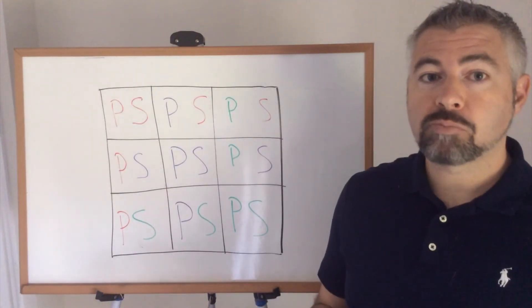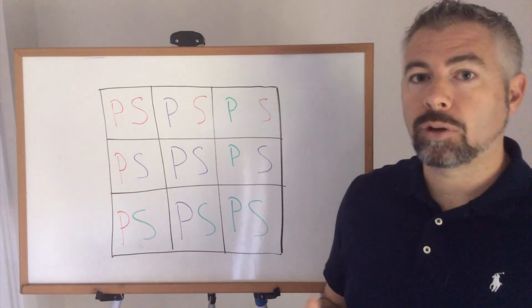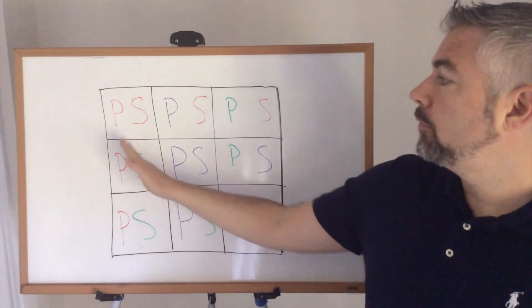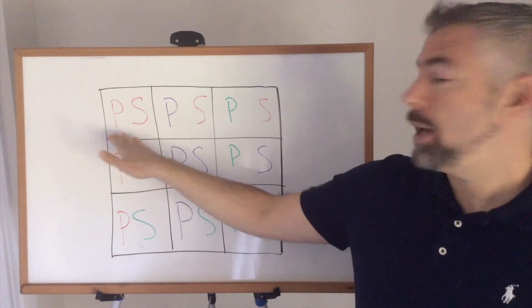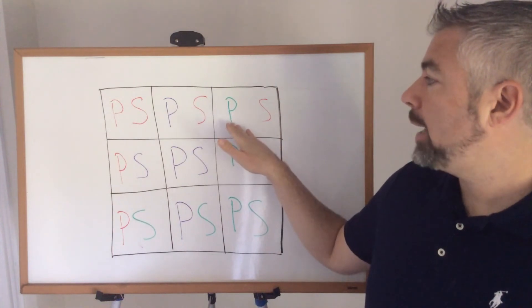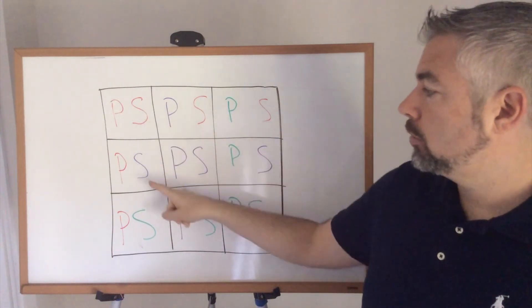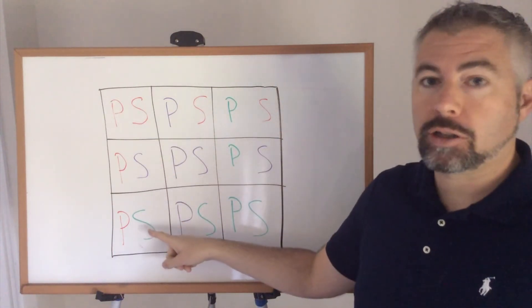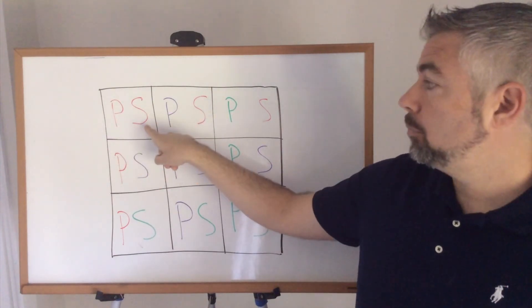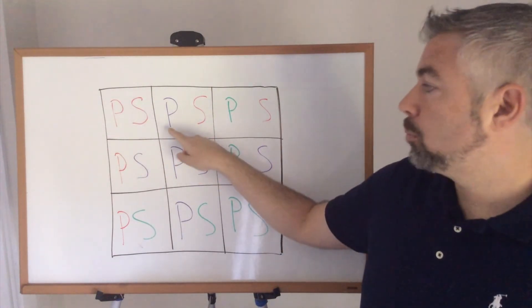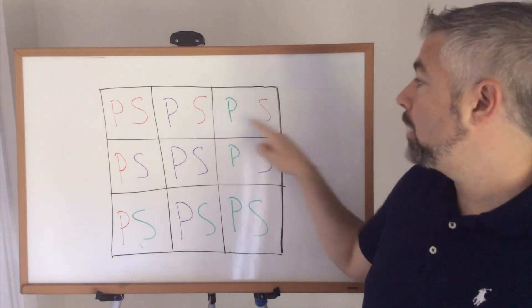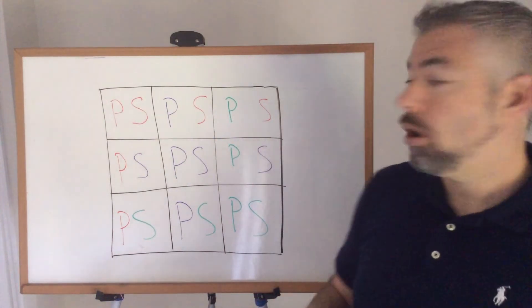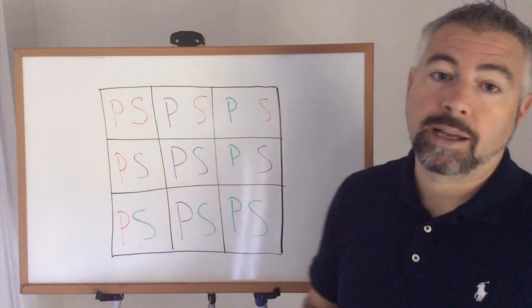You can represent Cartesian products visually in a table. In this example, if I have red pants, purple pants, and green pants, and then I have red shirt, purple shirt, green shirt, I can have red pants with a red shirt, purple pants with a red shirt, green pants with a red shirt, and so on, all together showing my nine combinations.